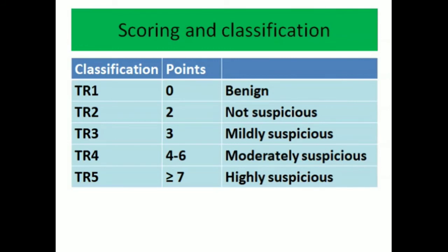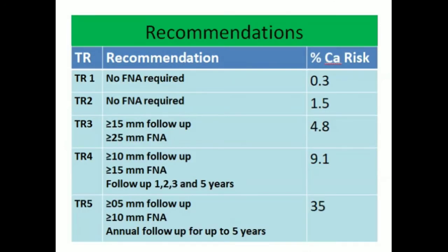TR4, which scores four to six points, will have a moderate suspicion for malignancy. TR5 scores seven or more points and these are highly suspicious for malignancy.